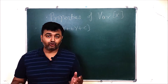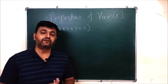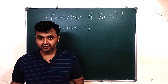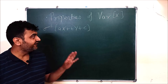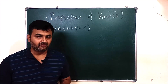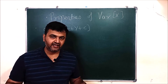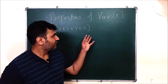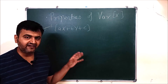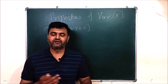Hey everyone. In earlier lectures we talked about expectation, variance, and covariance of random variables, and we also saw the properties for expectation and covariance. But we didn't see any properties for variance of a random variable. I was waiting for this lecture because I will need expectation and covariance while proving some of the properties for variance. So I'm going to state about 5 or 6 properties and then take some examples for better understanding.